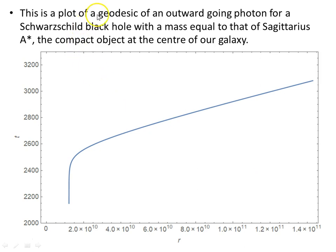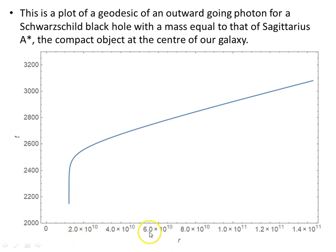Also from that video, there is a plot of the geodesic of an outward-going photon for a Schwarzschild black hole with a mass equal to that of Sagittarius A*, the compact object at the center of our galaxy. The outgoing geodesic is shown with time on the vertical axis and coordinate radius on the horizontal axis — these are coordinate radius and coordinate time.